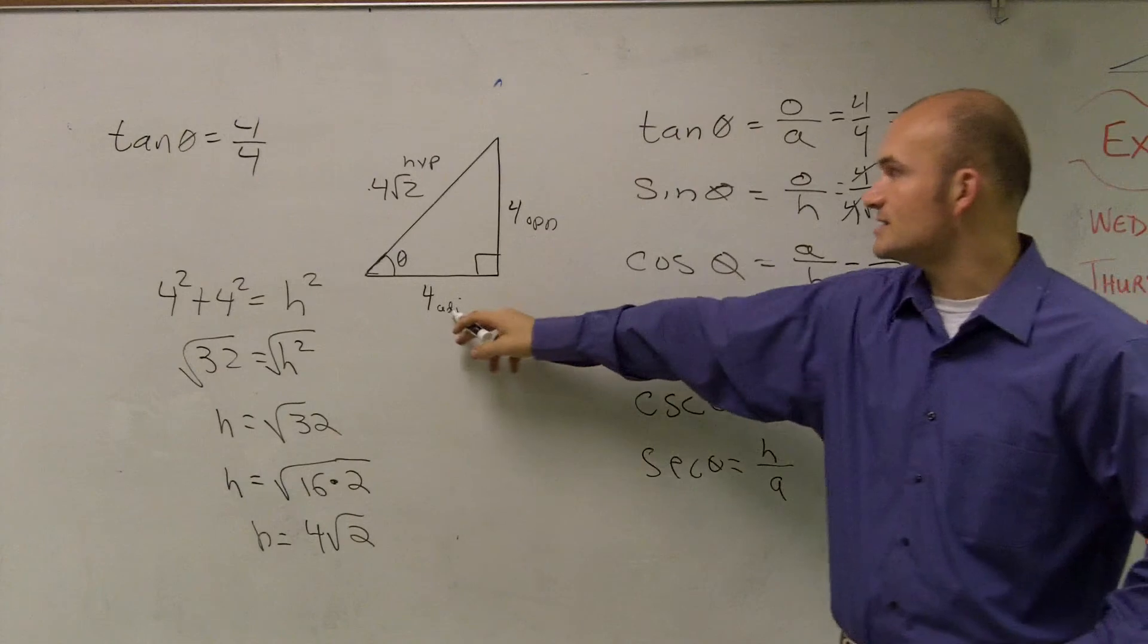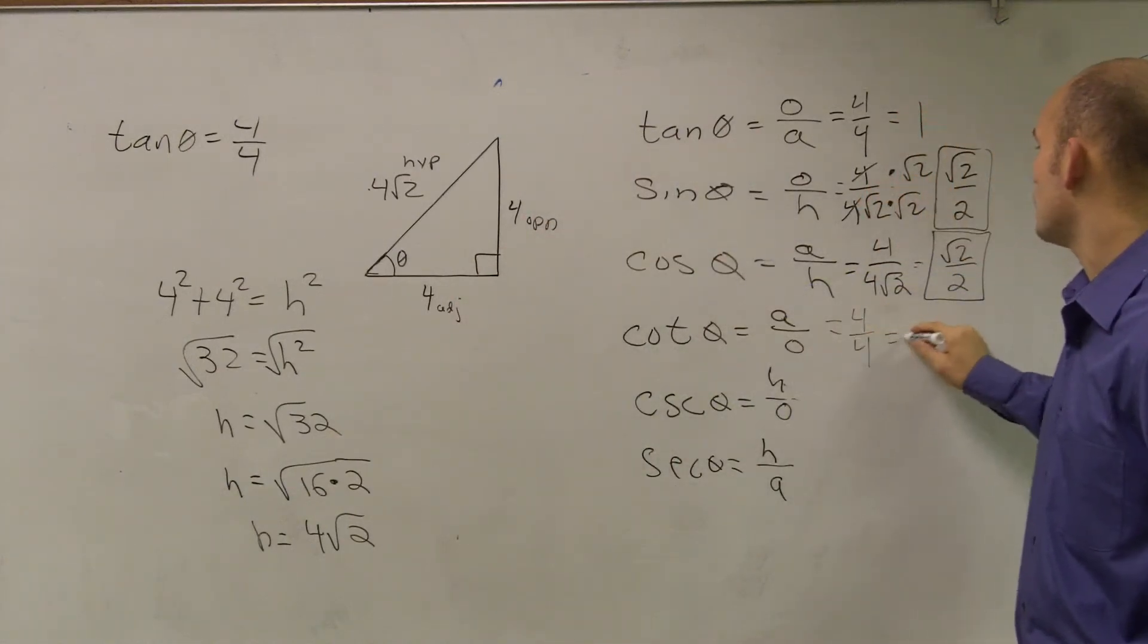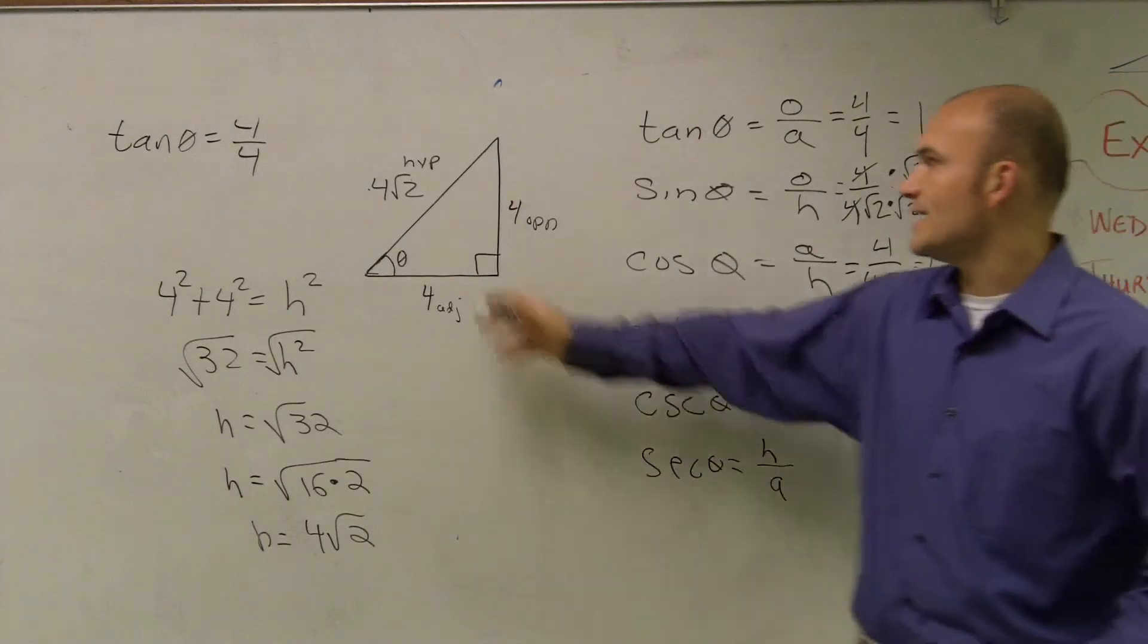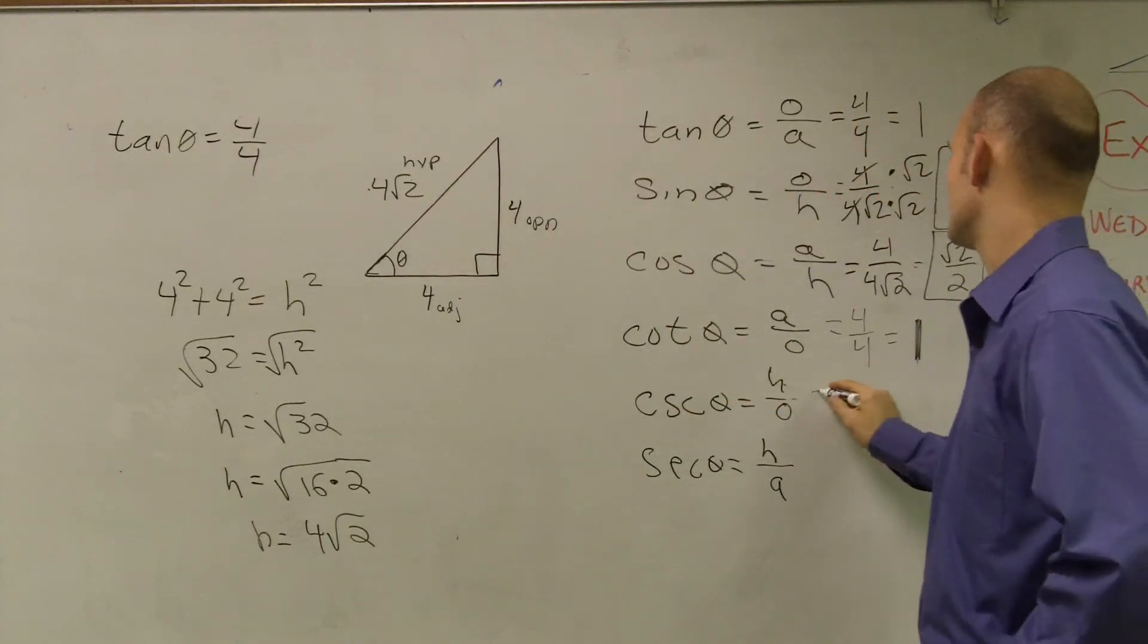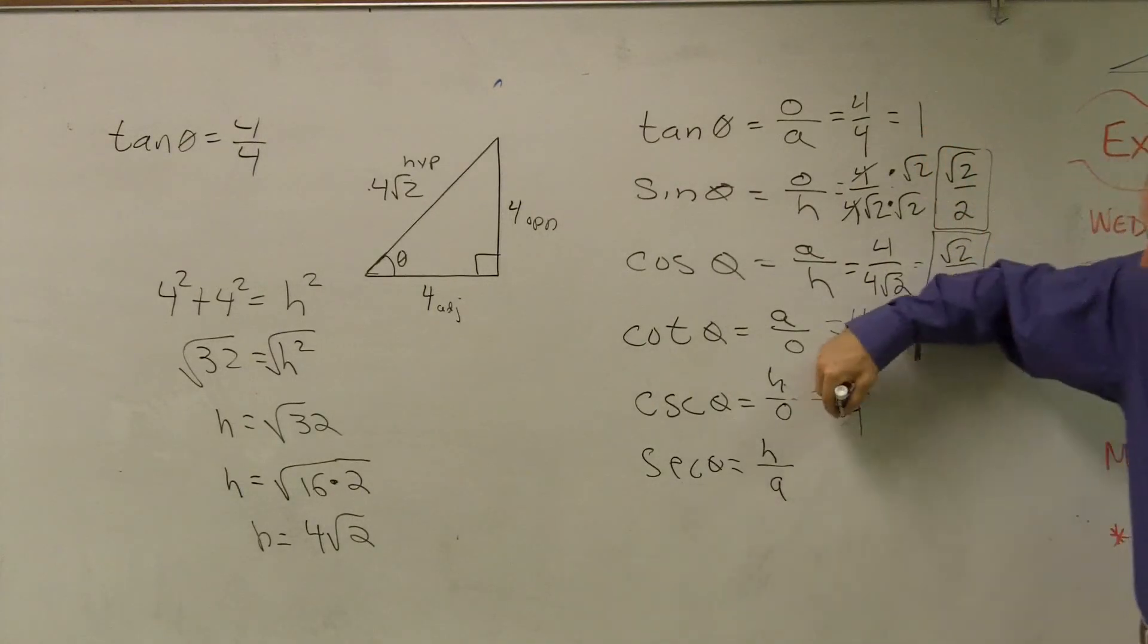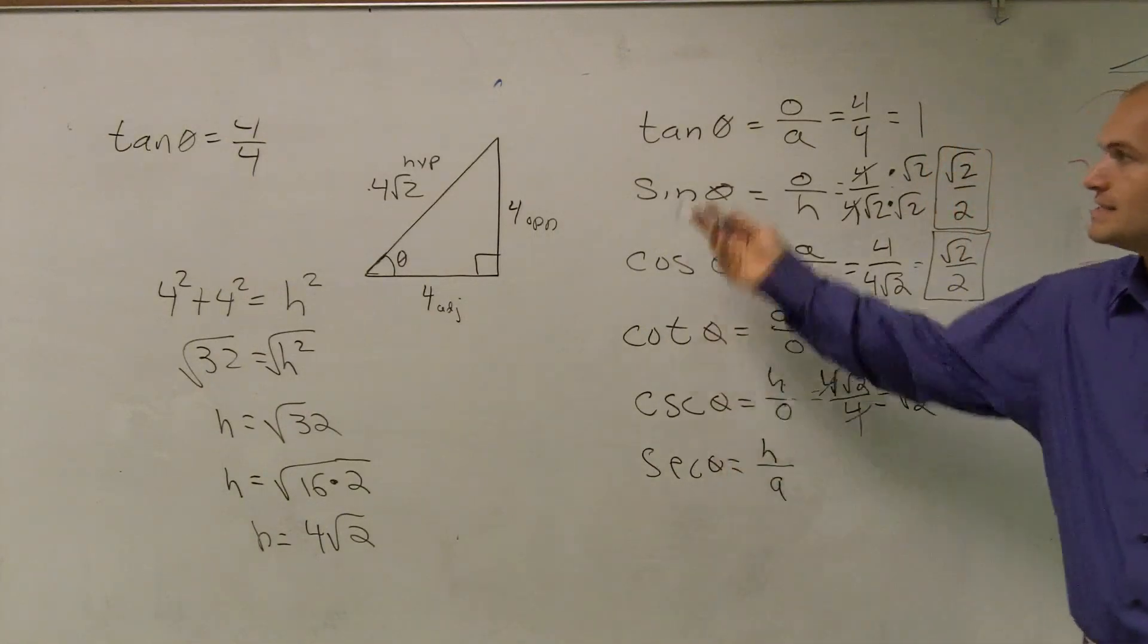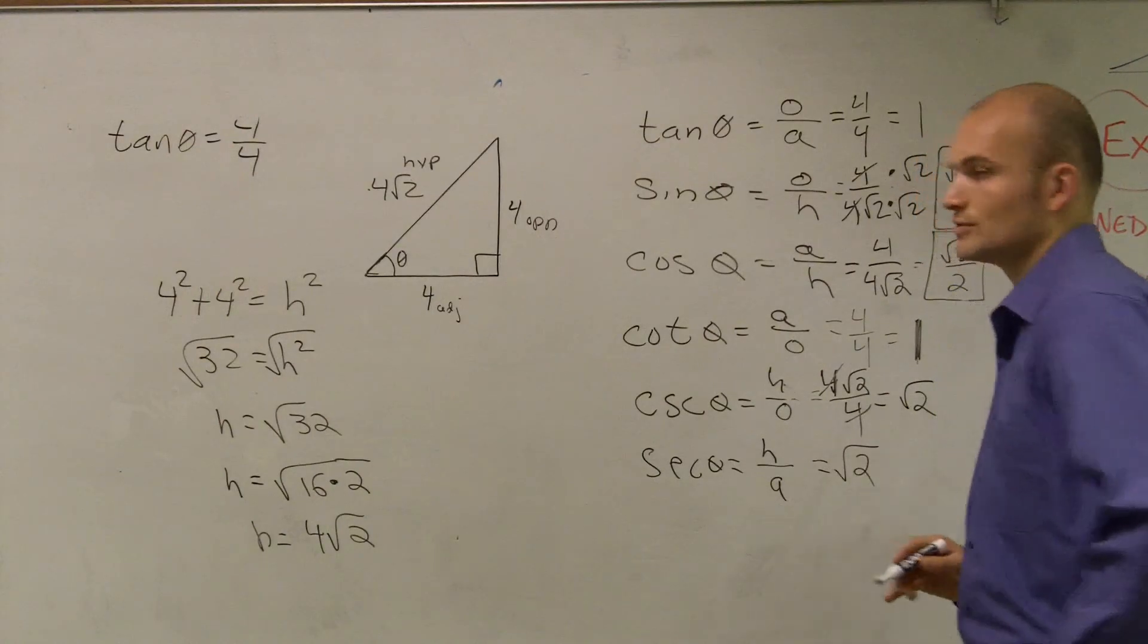Cotangent is adjacent over opposite, which again, 4 over 4, which will equal 1. Cosecant is 4 radical 2 over 4. What you guys can notice is now the 4 is going to cancel out, so I'll just be left with radical 2. And secant is going to be the exact same thing, so we just have radical 2.